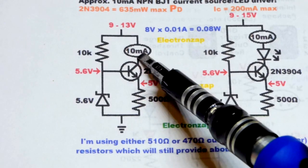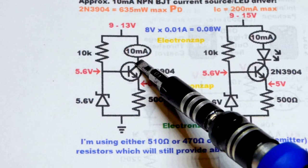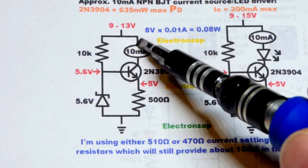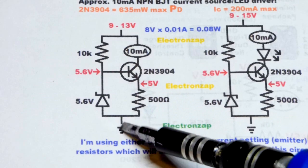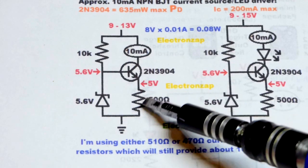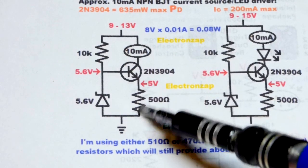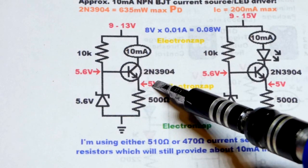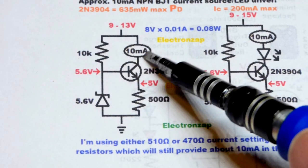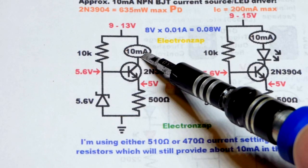But now instead we got the collector here. The current flowing through the collector, the emitter, and the current setting resistor depends on the voltage across the resistor because it's going to hold that voltage steady. So 5 volts divided by 500 ohms of resistance is 0.01 amps or 10 milliamps right there.